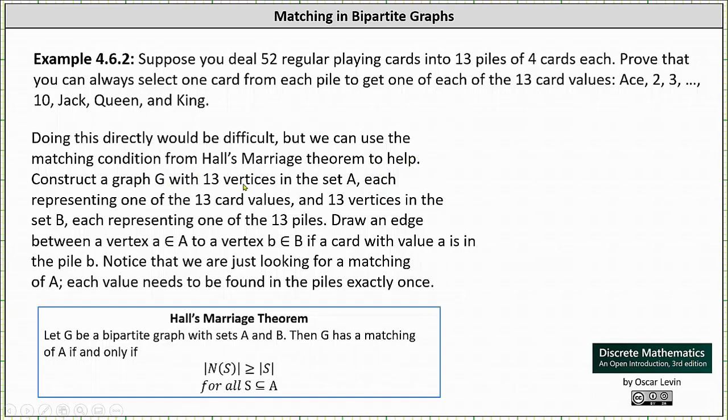Construct a graph G with 13 vertices in set A, each representing one of the 13 card values, and 13 vertices in the set B, each representing one of the 13 piles.